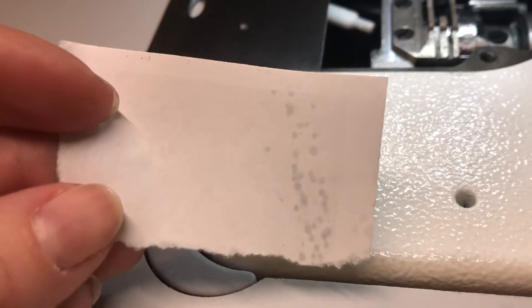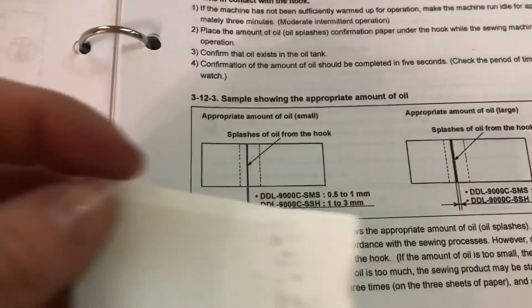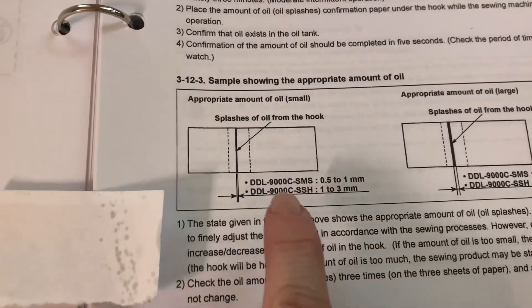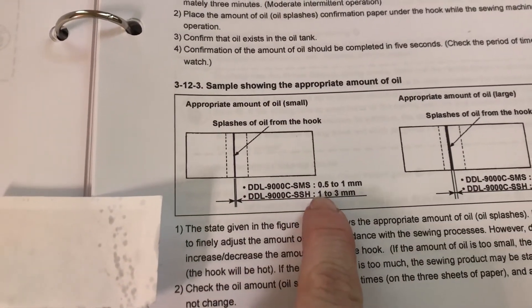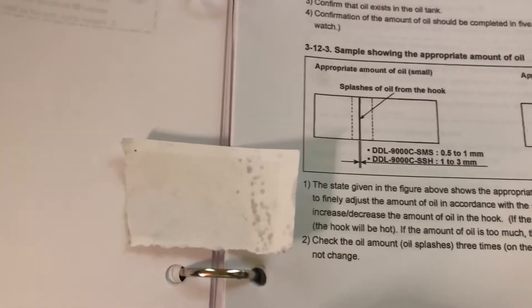Let's see, got some oil splashes. It's not like a stream of splashes like this shows, it's definitely more splashy. But it's saying for the SMS version which I have, they want 0.5 to 1 millimeter thick band of splashes. I don't really know how to take this.